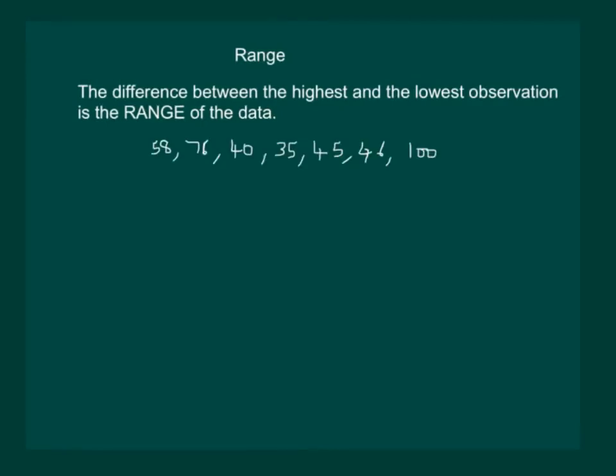For example, let us consider this data. The lowest observation in this data is 35. While the highest observation is 100. So, range can be calculated as highest observation minus the lowest observation.